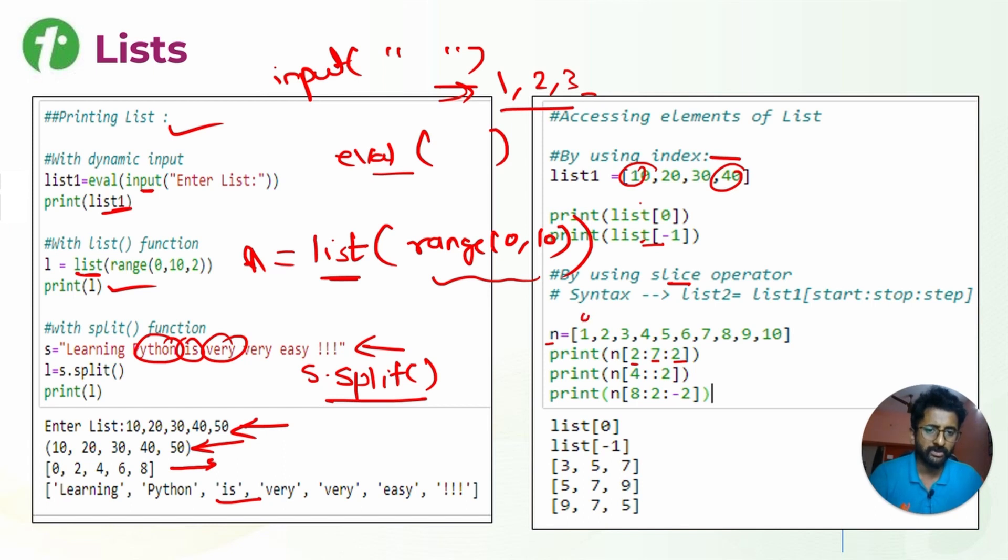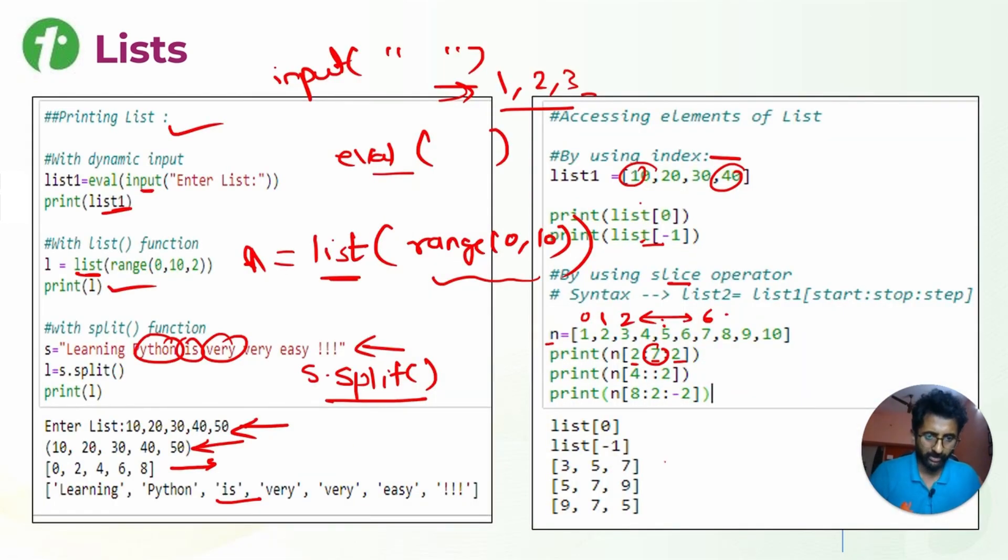Similarly, by using a slice operation - 2 to 7 with steps of 2. For example, index 2 to 7 means this is 0, this is 1, this is 2, so 2, 3, 4, 5, 6, 7 - or up to 6 since 7 means we will execute up to 6. In steps of 2 means we will start with 3, then 5, and then 7. So here is our output.